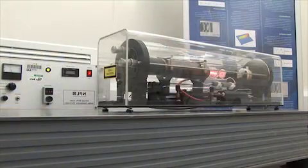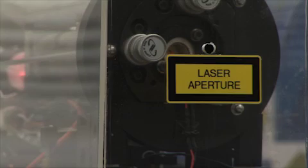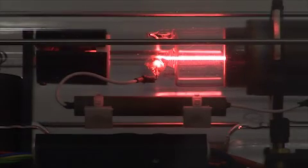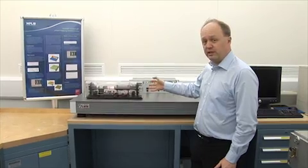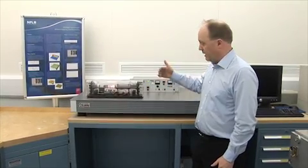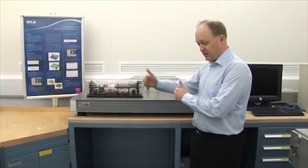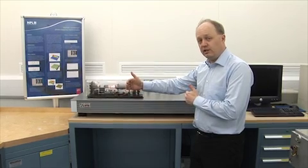This is one of the lasers that we use to realise the definition of the metre here at NPL. The laser emits a light of one particular wavelength. It's monochromatic. We use light from this laser in the interferometer and compare the wavelength of the light directly against the length of the object that we're measuring.